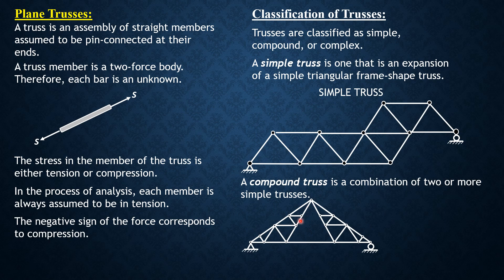Trusses like this one: we have a simple truss, another simple truss, and they are combined by meeting them to their common joint and adding one additional bar. Another compound truss is this: we have a simple triangular truss here and another triangular truss here.